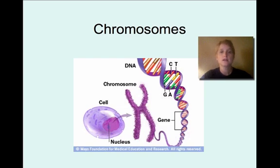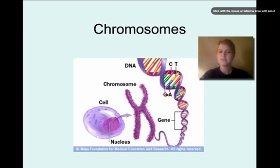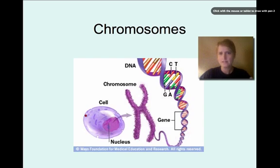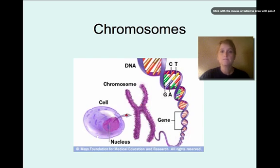Let's look at chromosomes. Chromosomes are where the genetic information is stored in the cell. The nucleus is an organelle in the cell — it's the largest one — and inside the nucleus are the chromosomes. Different organisms have different numbers of chromosomes, but humans have 46 chromosomes in each cell.